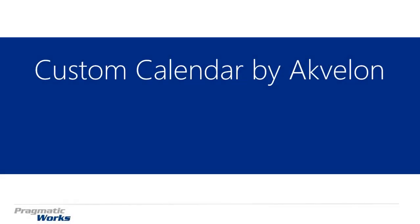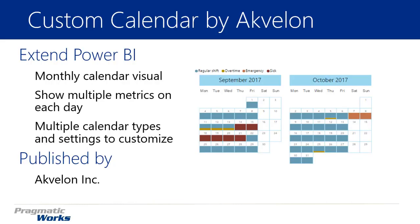Welcome back to the Power BI Custom Visuals course. In this module we're going to be looking at the Custom Calendar by Ekvalon. This is another calendar — we've looked at quite a few throughout the different modules — but this one's a little different. It has the ability to show multiple measures on a single day, so you can have multiple metrics on a single day. As you can see on the right, we're showing a work calendar with regular hour shifts, overtime, and PTO days all shown on this calendar.